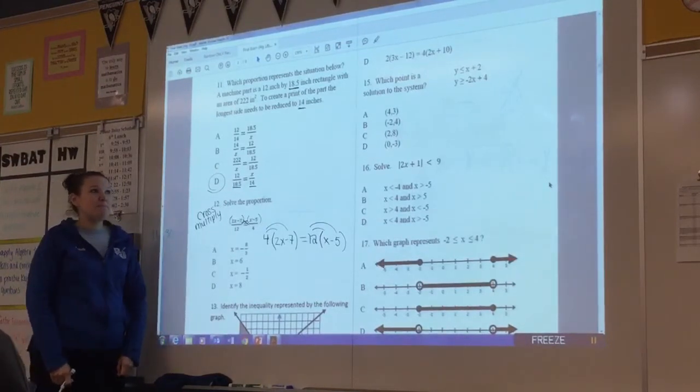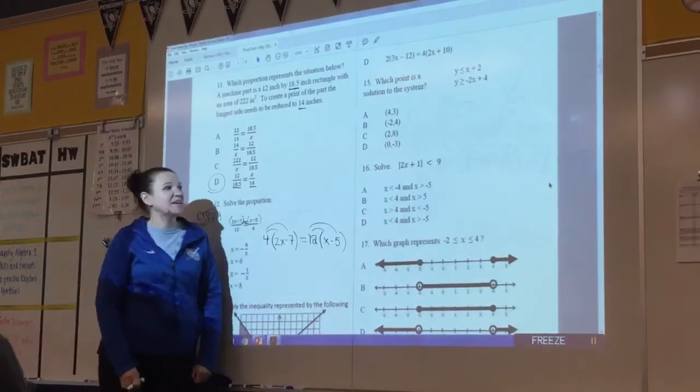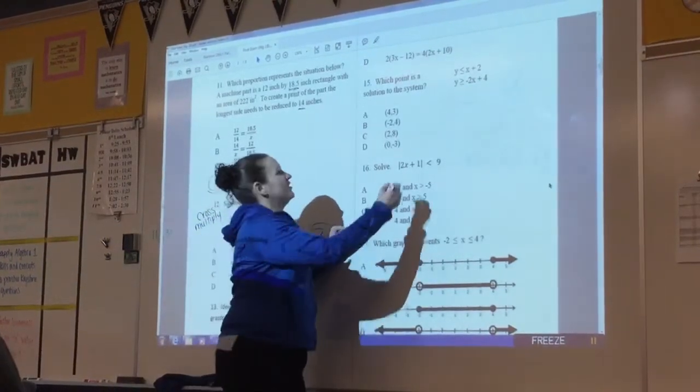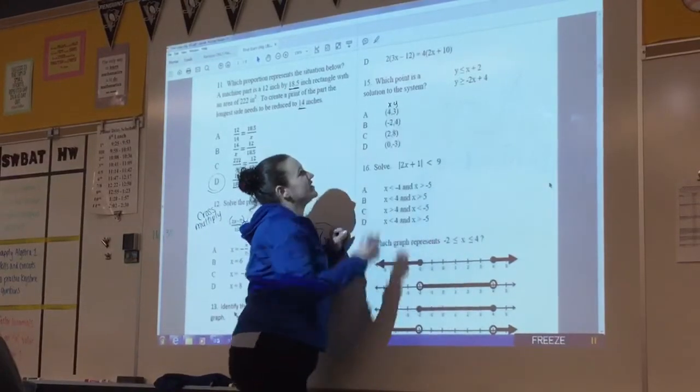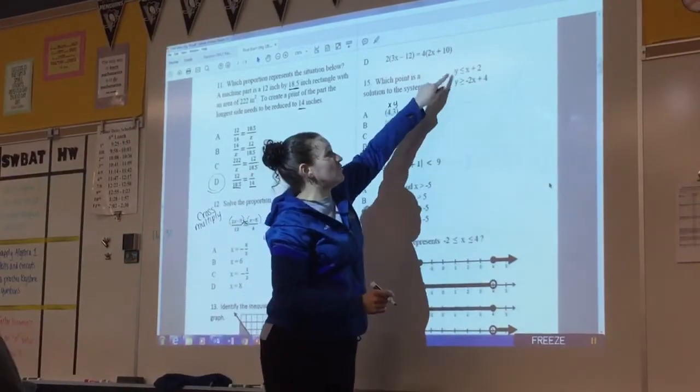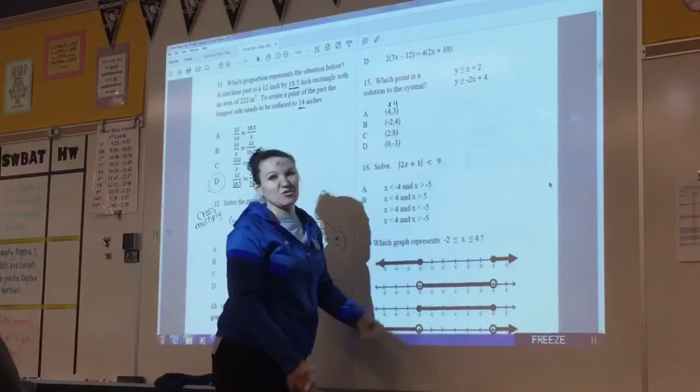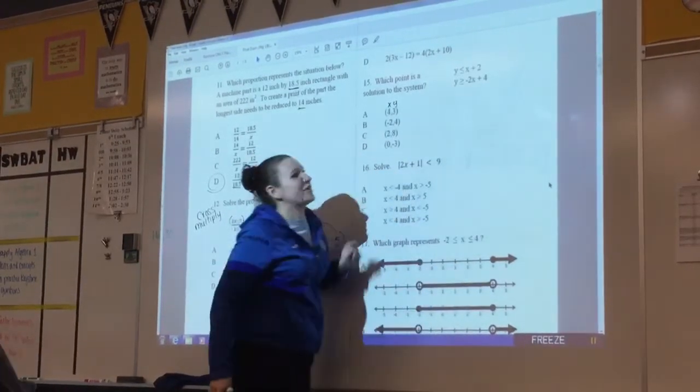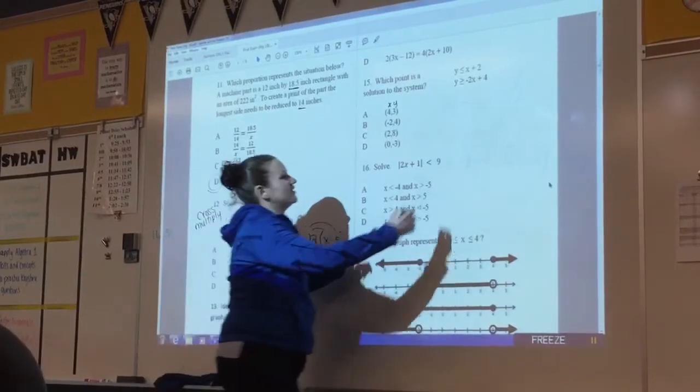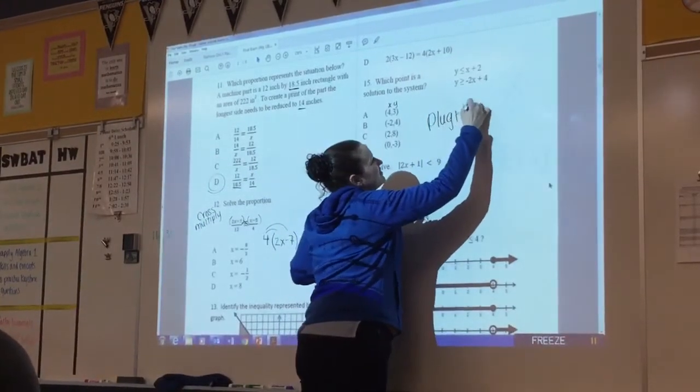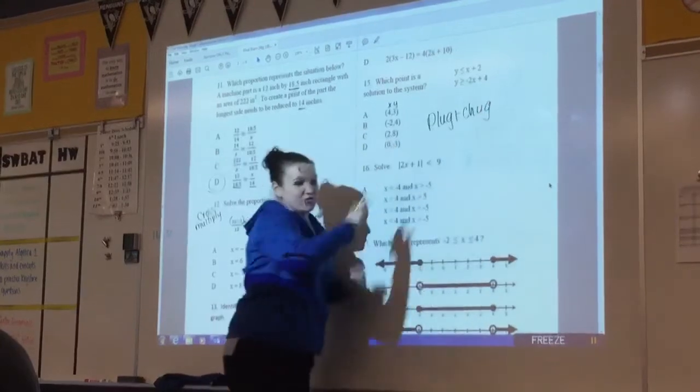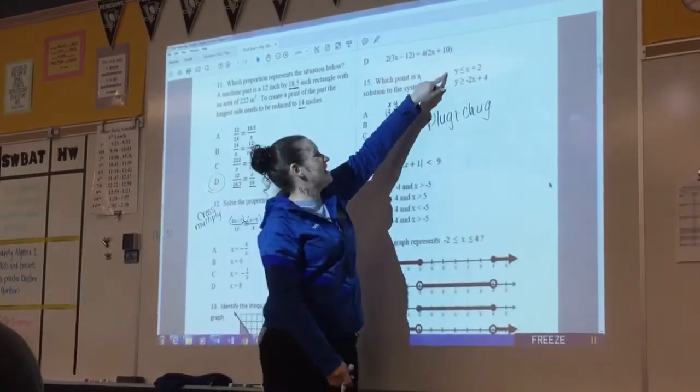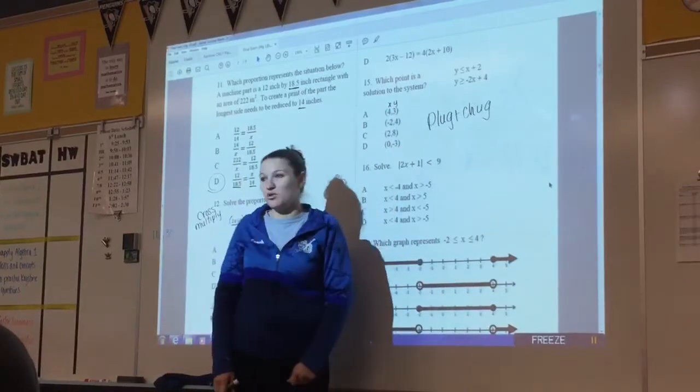Number 15, my best suggestion here is to plug it in and see if it works for both. So you're going to plug in for your x and y for both inequalities and see if it works. Remember this is less than or equal to and the bottom one is greater than or equal to. So that's just something we like to call plug-in chug. Plug it in, work through the entire solution, see if it works. If it works for both of these then you know you've found your ordered pair.